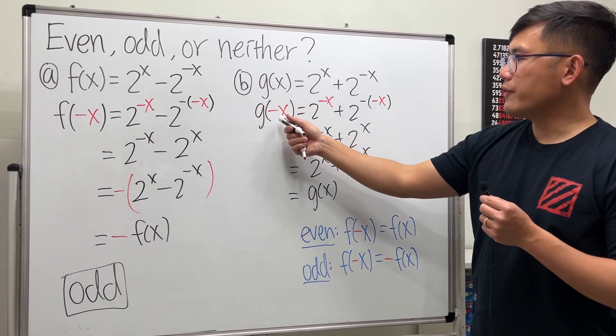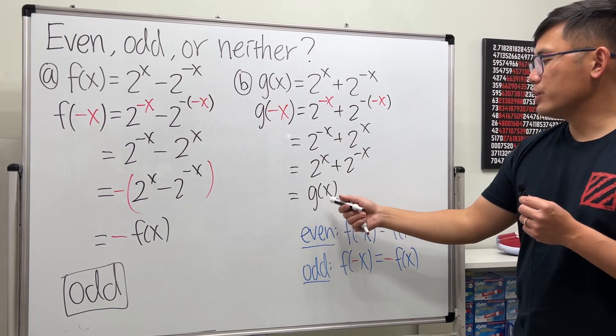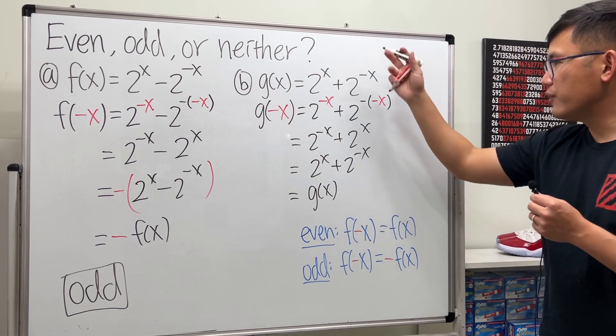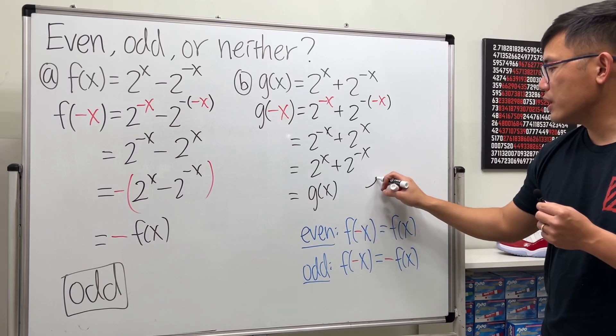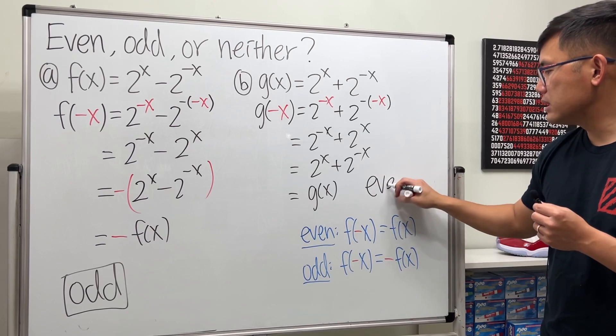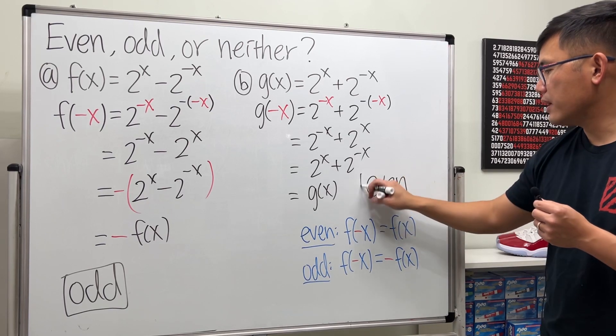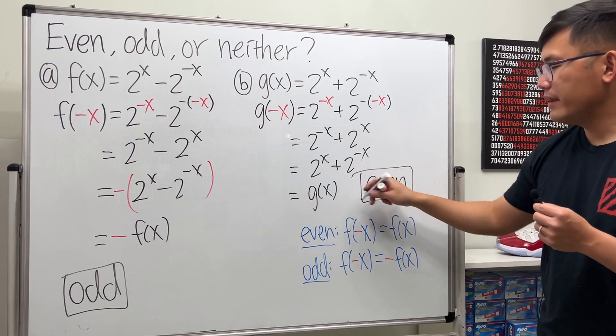So g of negative x equals g of x. Therefore this function is even, and we are done.